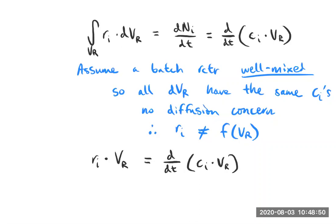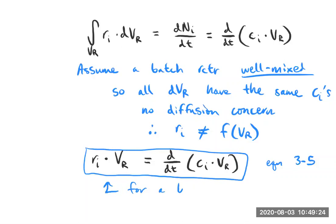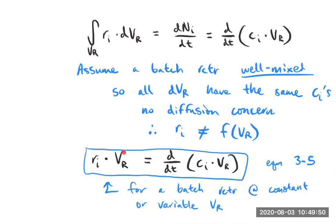We're starting with a general balance that only has four terms, and you should feel comfortable doing this derivation yourself on every homework problem. For reference, this is equation 3.5 in the Roberts textbook. This result — the batch reactor design equation — holds for both constant and variable volume. Note that all we needed was to assume R_i doesn't depend on V_R in order to integrate and obtain this form. We haven't yet taken V_R out of the time derivative.